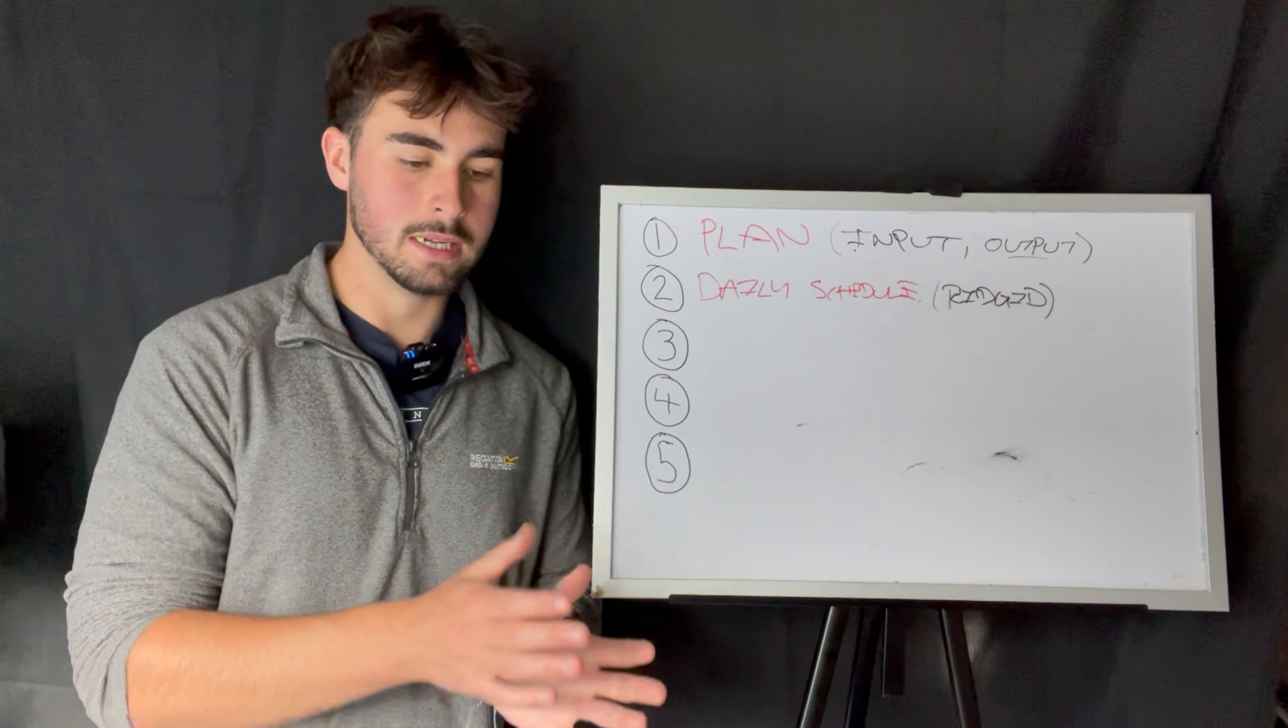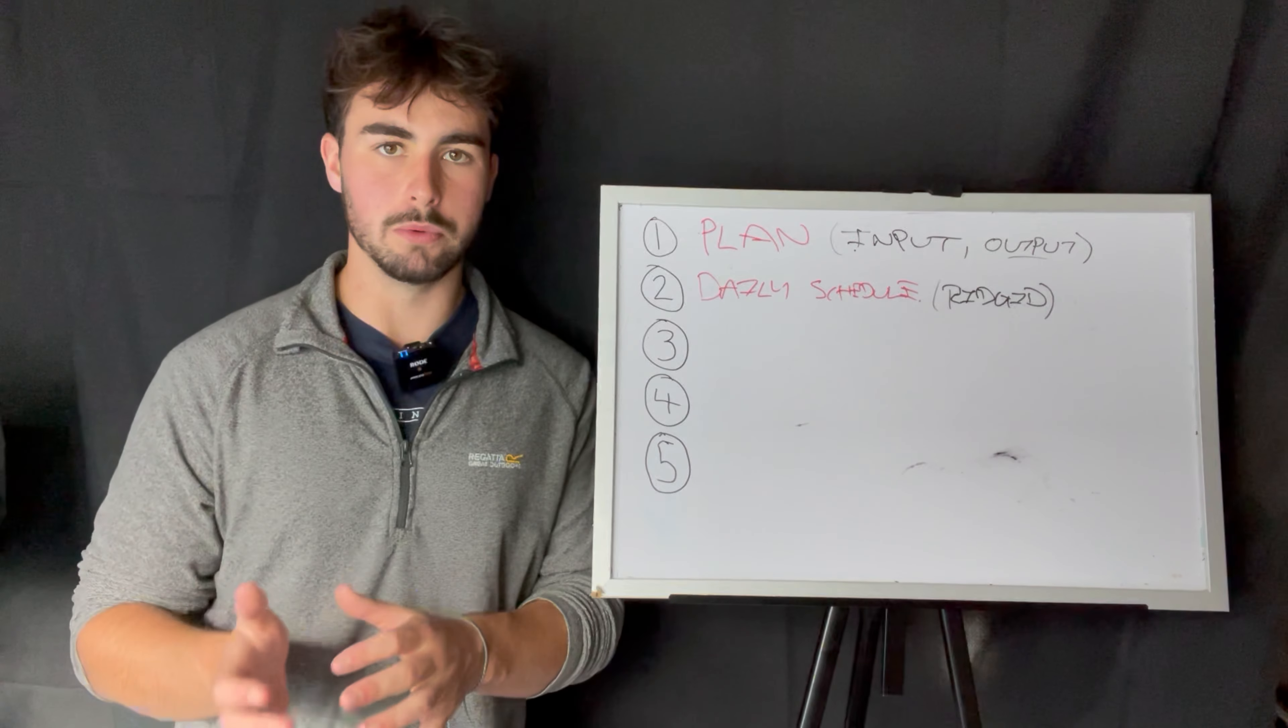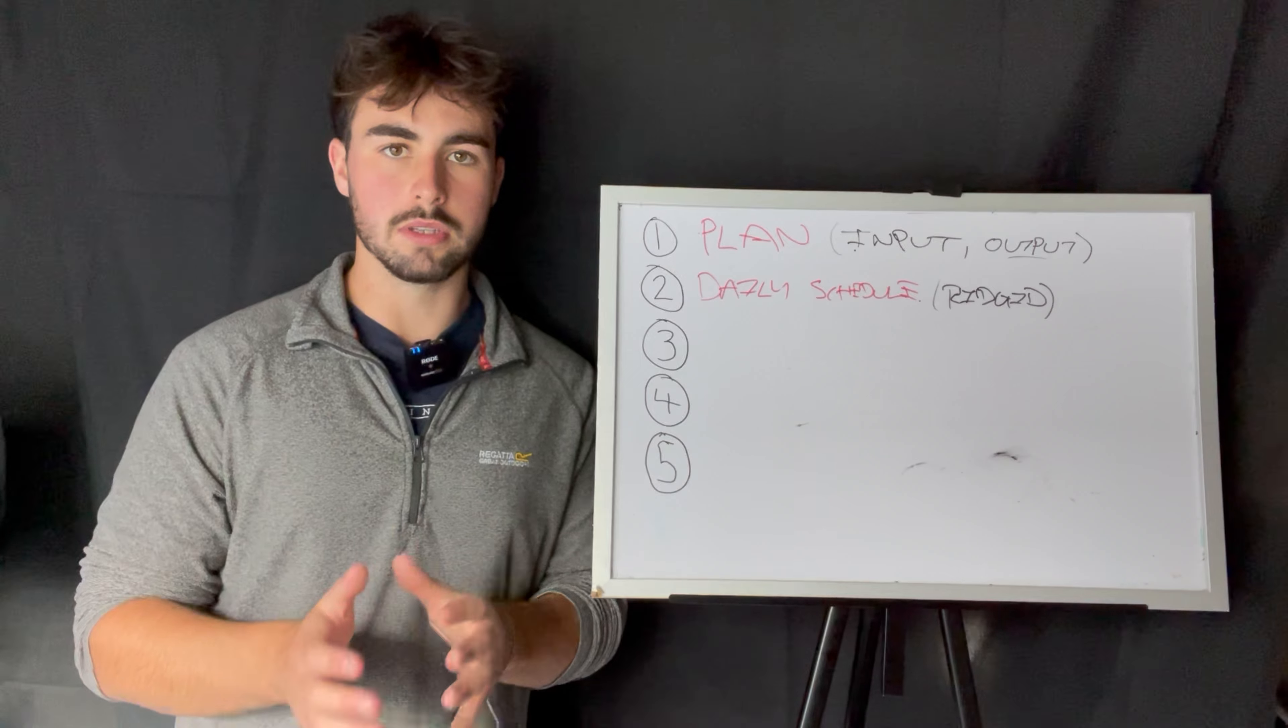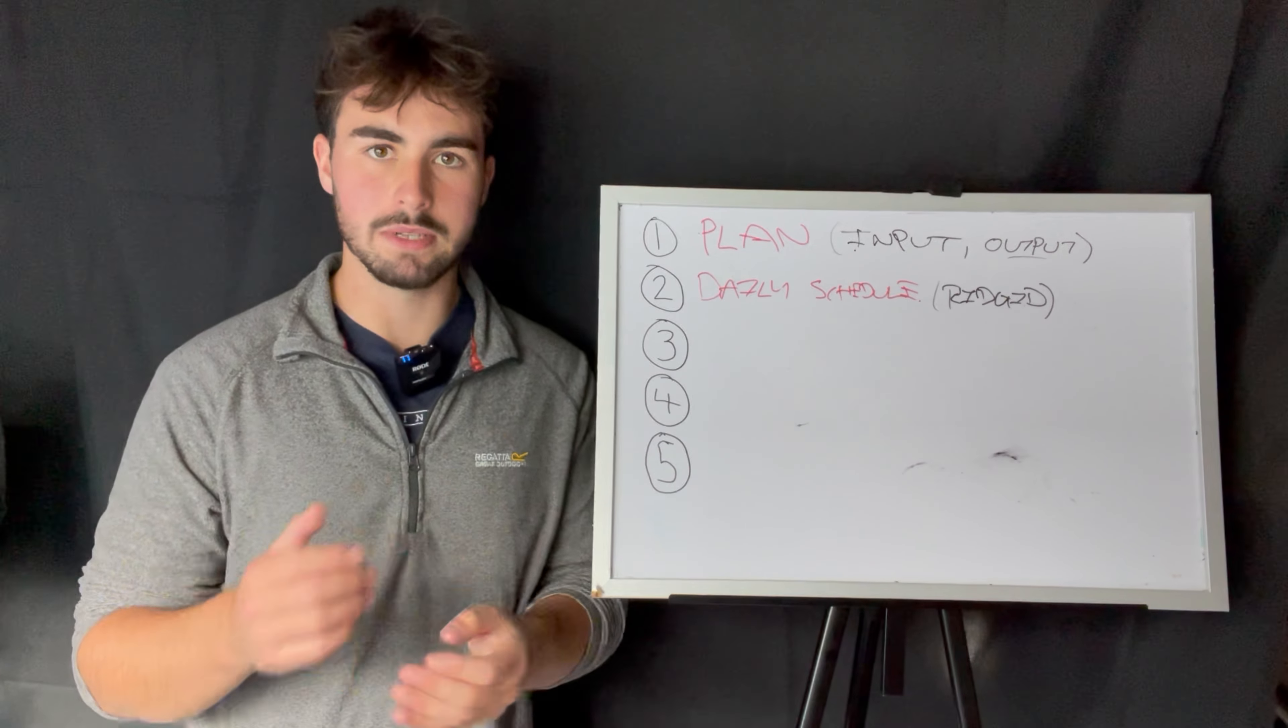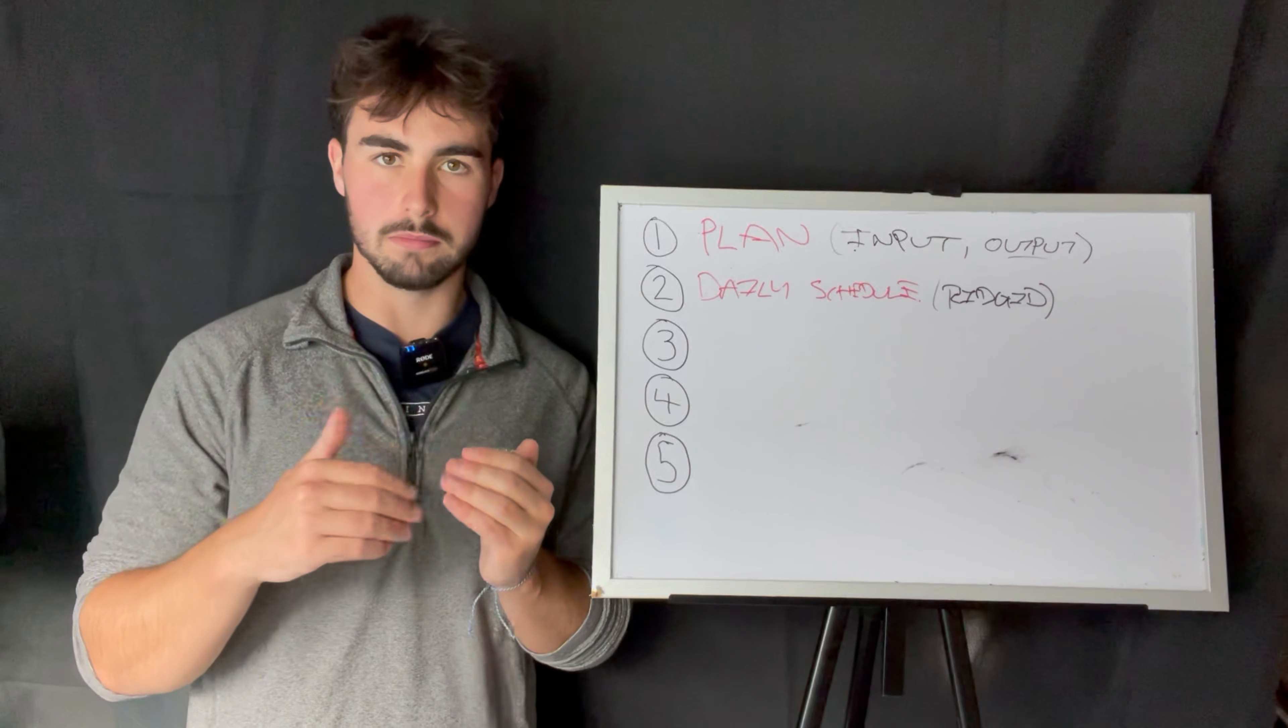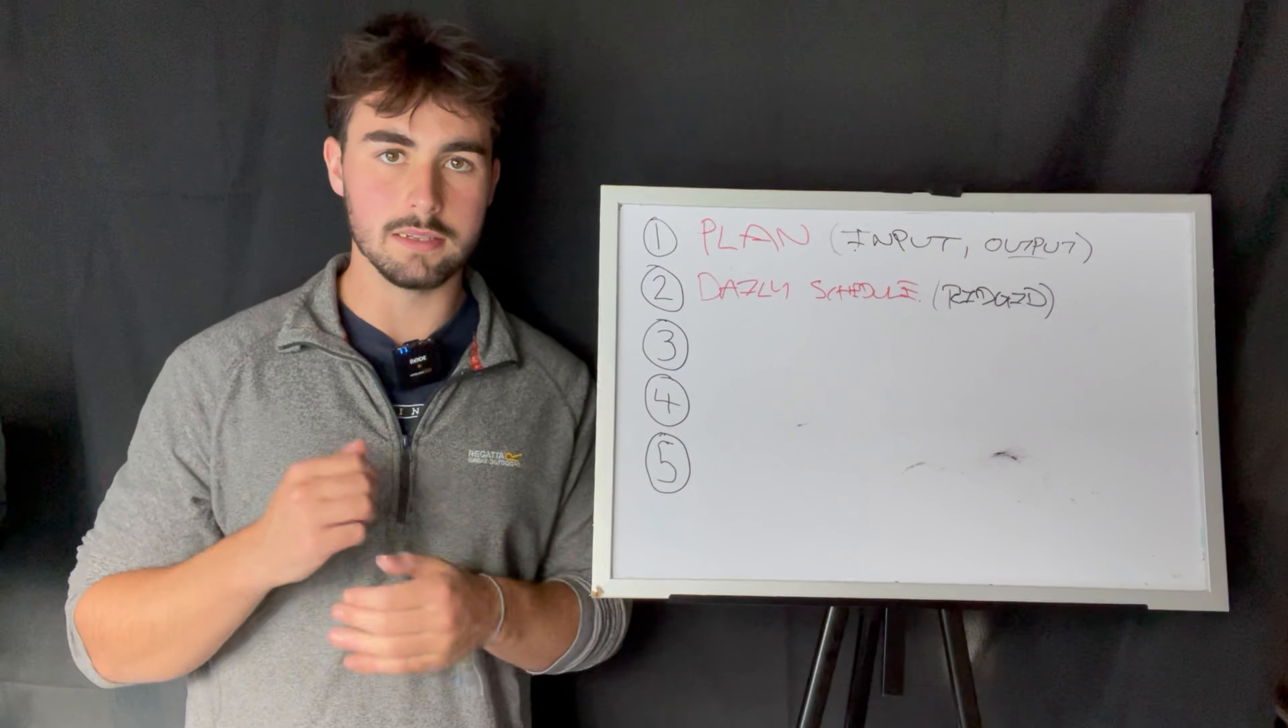You want the same sleep time, wake-up time, eating times, same meals, same work times, rest times, nap times. Everything needs to be in line. You can have a little bit of flexibility, but for the most part these things have to be in line and you need to know exactly what you're doing every single day.